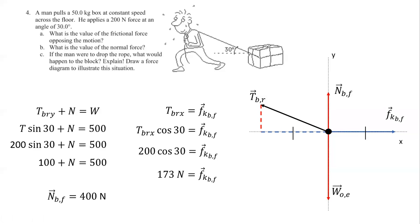Part C: if the man were to drop the rope, the normal has to balance out the weight, so the normal gets longer and the tension drops off. The box was moving at constant speed, so it still has an initial velocity with friction. Because it's now an unbalanced force diagram — you have normal, weight, and friction — and it's moving to the left, it would start to slow down.